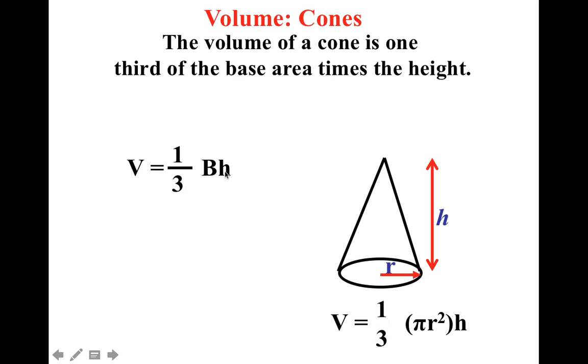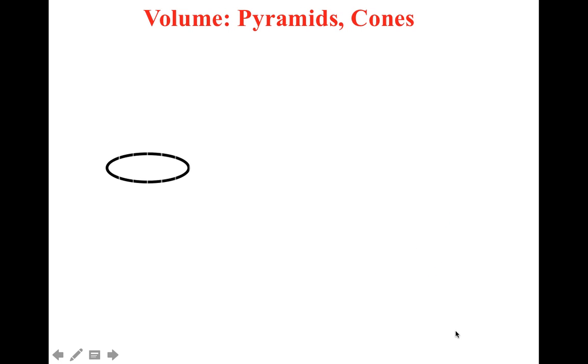Now, what I hope you guys remember is that the base of this area will be a circle. And that's why a lot of people will see volume of a cone be written as one-third pi r squared, which is the area of a circle, times the height. Let's see a problem done.